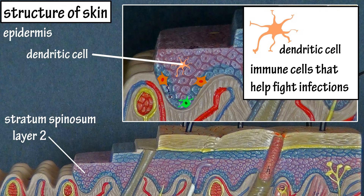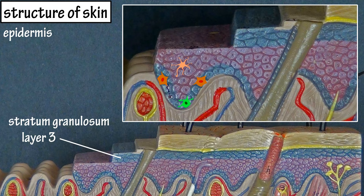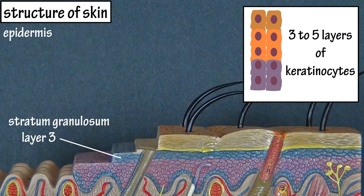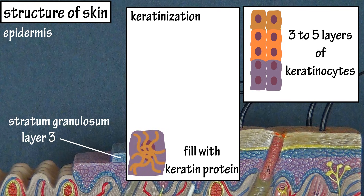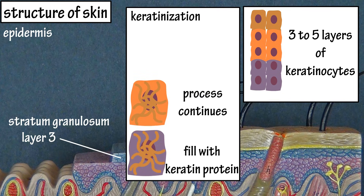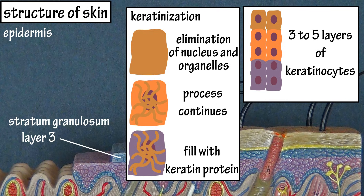Moving upwards, the next layer is the stratum granulosum. This layer is comprised of three to five layers of keratinocytes. The process of keratinization begins in this layer of the epidermis. Keratinization is where the keratinocytes fill with the keratin protein mentioned earlier. This process continues as the cells move upwards in the epidermis, and as it continues, the cell's nucleus and organelles are eliminated and the cell dies.